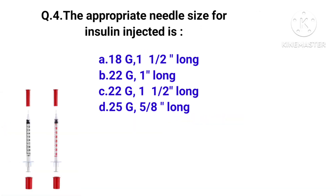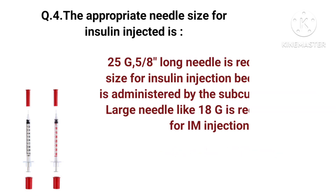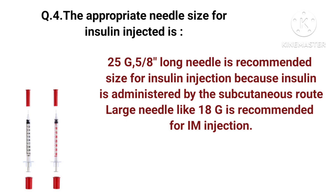The appropriate needle size for insulin injection is 25 gauge and 5/8 inch long. This needle size is recommended for insulin injection because insulin is administered by the subcutaneous route. A large needle like 18 gauge is recommended for IM (intramuscular) injection.